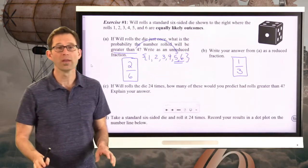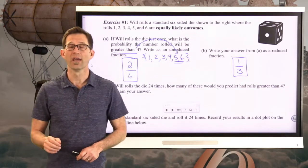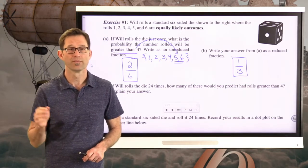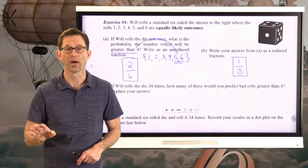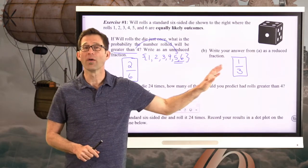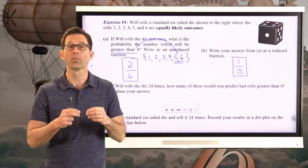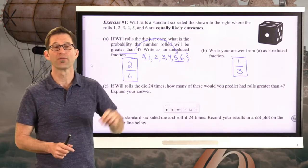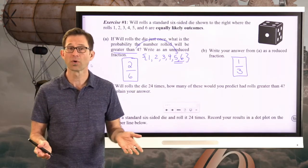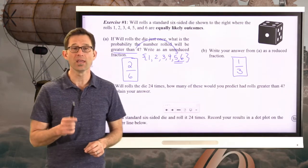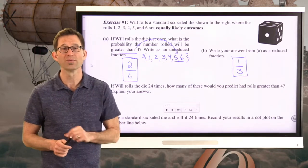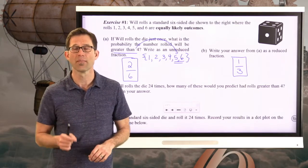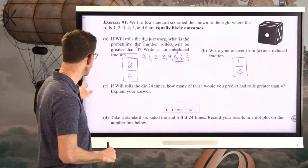Easy enough. I could divide both numerator and denominator by 2, and I get a reduced fraction of 1 third. Now, I want you to really understand what that means. That means that if I roll this die a bunch of times, however many times, 1 third of the times we would expect or we would predict 1 third of the time for a number greater than 4 to be rolled.